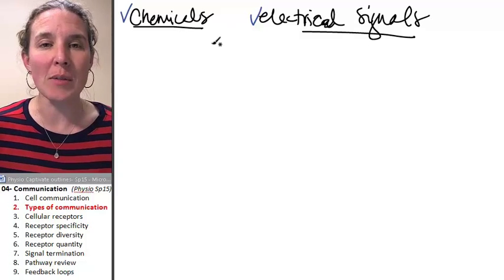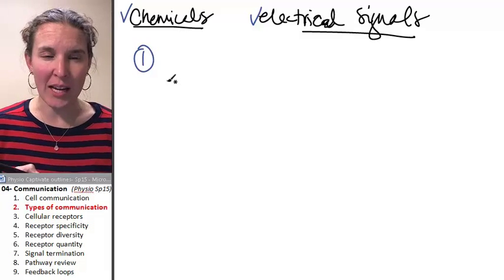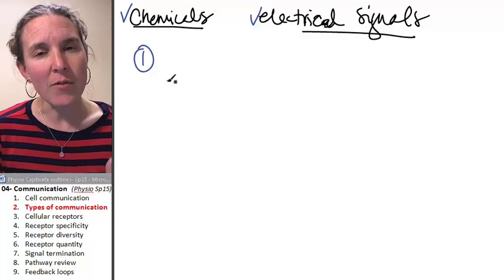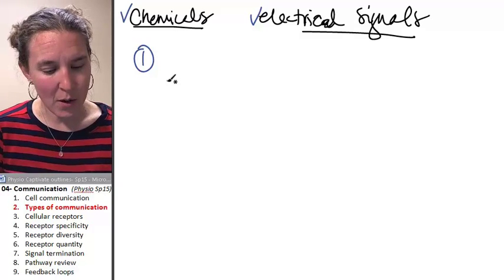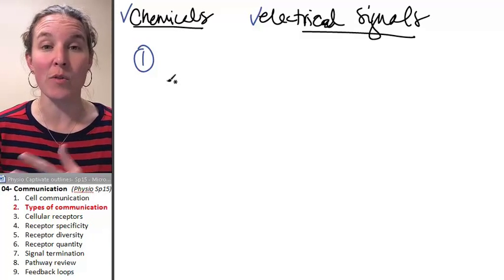I'm going to give you some examples here, and then you can figure out how this is related to communication. Think about the fact that we've talked about pathways. We know that somehow information has to be carried from place to place.